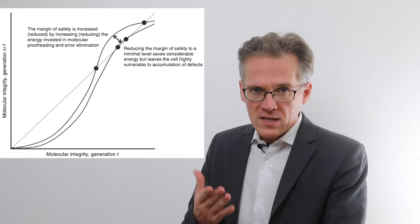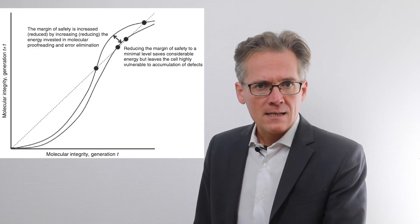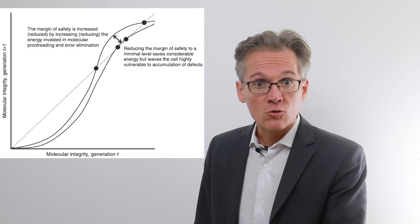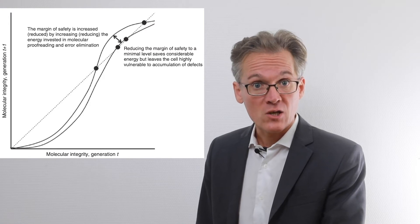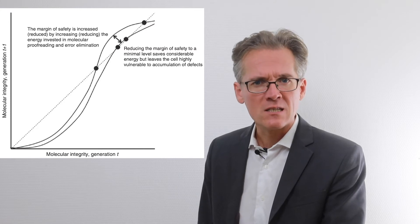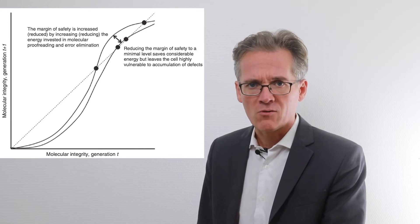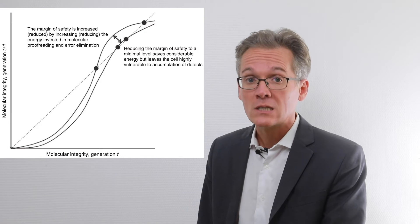This prediction was very much in line with the discovery since the 1990s of a series of genes of aging. Here is the fundamental curve that summarizes the main mechanism according to Kirkwood. This curve represents the level of integrity in an organism of a replicated macromolecule at generation T+1 as a function of the integrity of the same type of macromolecule at generation T.